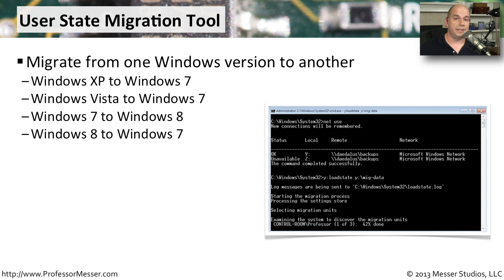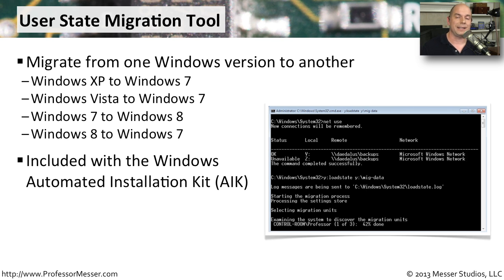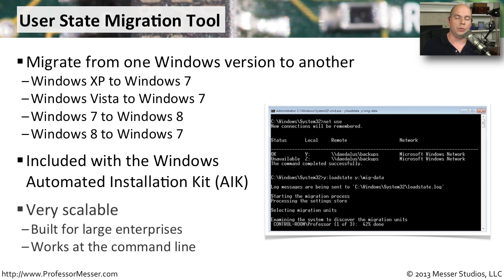If you're in a larger organization, you may need a way to automate this process — you don't have time to go to everyone's computer and step through the graphical interface. Instead, you might want to script or automate it using a tool Microsoft provides called the User State Migration Tool (USMT). This also allows you to migrate from one Windows version to another — for example, Windows XP to Windows 7, Vista to Windows 7, Windows 7 to Windows 8, or even Windows 8 back to Windows 7. It's included with the Windows Automated Installation Kit (AIK) and is scalable across your entire organization. Because it's a command-line option, it's very easy to deploy and have many people using it simultaneously.